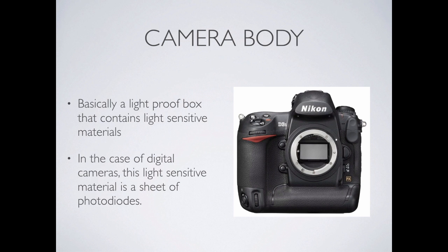We start with something called the camera body, which is a light-proof box that contains some kind of photosensitive or light-sensitive material. That light-proof box could be something like a big digital SLR, or it could be as simple as your phone — that works and does the same thing. What we need is some way of controlling the light and how it comes in, making sure that the photosensitive material — in the case of a digital camera, a chip — is not exposed to light all the time, and when it is, it captures the photo.